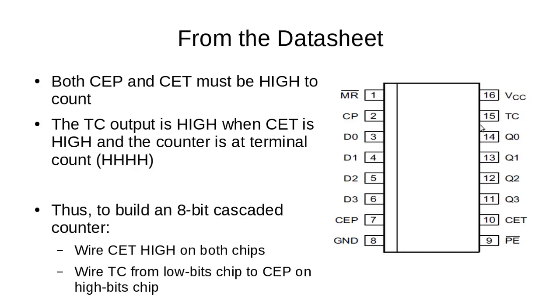When it gets up to 15, TC goes high. We can wire TC up to one of those CEP or CET lines on the high chip. Until it gets to 15 that line stays low so that chip isn't going to be counting. When it gets to 15 it goes high, the top chip counts up another value, this one goes back to zero, and thus we get our cascaded 8-bit counter.